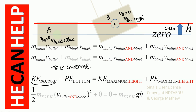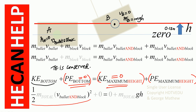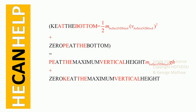At the bottom, the system has kinetic energy but zero potential energy. At the maximum height, it has potential energy but zero kinetic energy. Ignoring the zero terms, kinetic energy at the bottom equals potential energy at the top: one-half m-total times v squared equals m-total times g times h. The masses cancel, and multiplying both sides by two gives: speed of bullet-and-block squared equals 2gh.